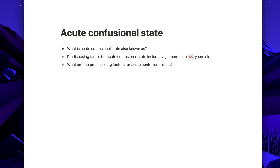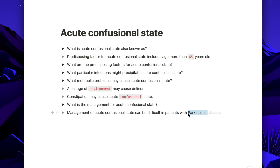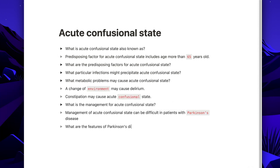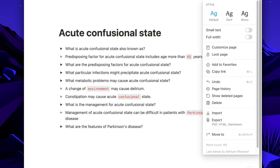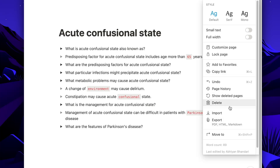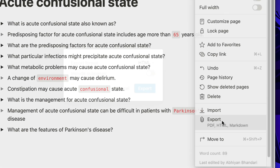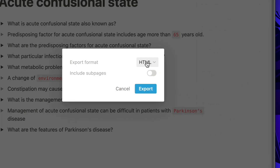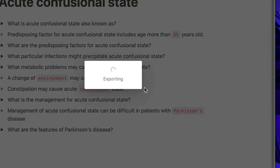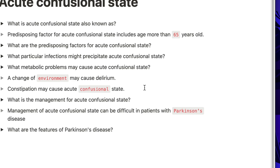Continue creating your Notion notes in this way — toggle being the front of a basic card, or a cloze card using Command+E to highlight the cloze option. Once you're done, go to your Notion page, click on the three dots in the top right corner, click on Export, and export your page as HTML.